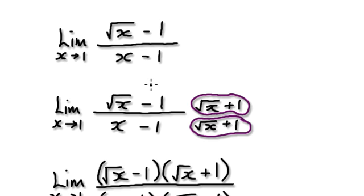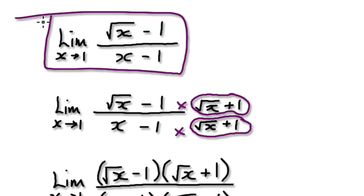I made a mistake on my first attempt, and only in making that mistake did I realize there was a better way of doing it. Sometimes you just have to play around and make silly mistakes. Starting here, you times top and bottom by the conjugate.